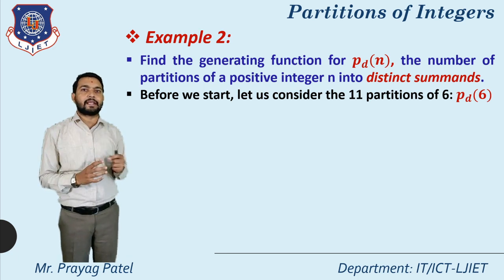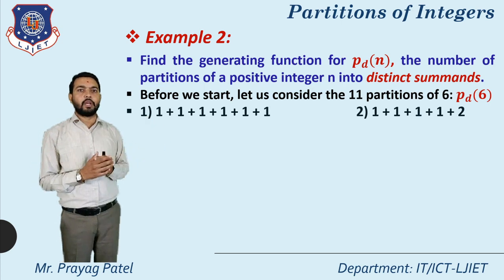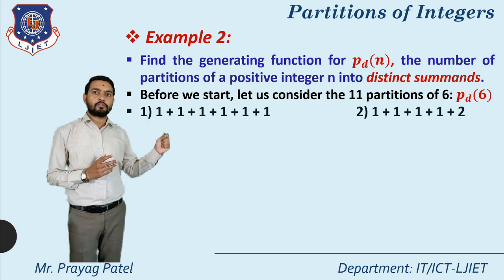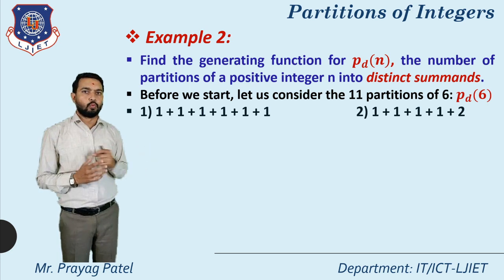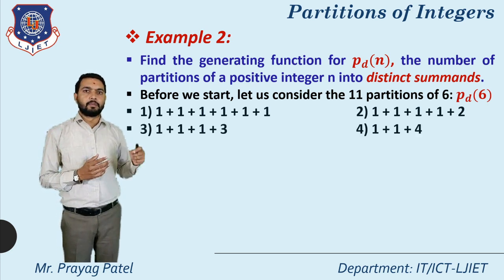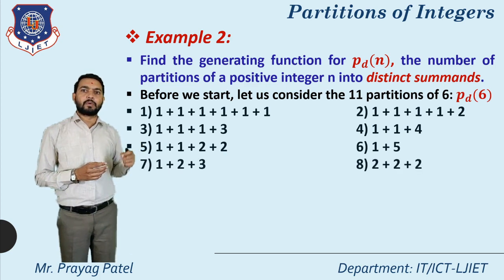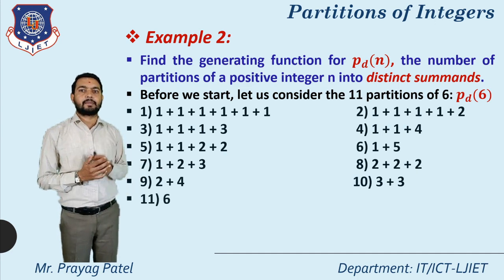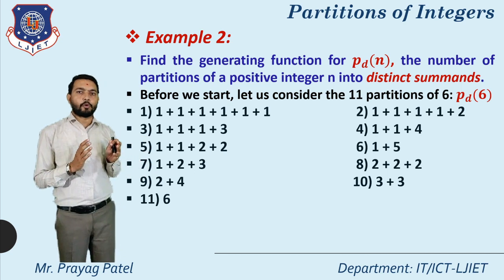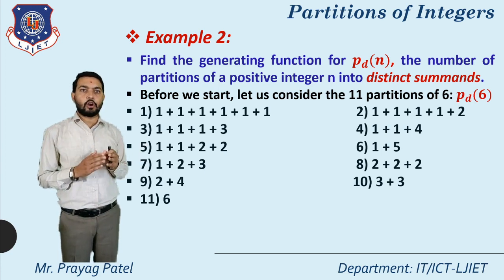The 11 partitions of 6 are: (1) 1+1+1+1+1+1; (2) 1+1+1+1+2; (3) 1+1+1+3; (4) 1+1+4; (5) 1+1+2+2; (6) 1+5; (7) 1+2+3; (8) 2+2+2; (9) 2+4; (10) 3+3; (11) 6. These 11 are different possibilities for writing 6, and this total 11 is p(6), not p_d(6).